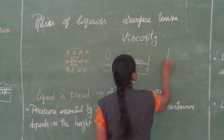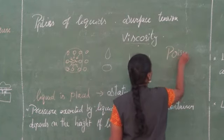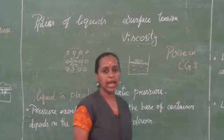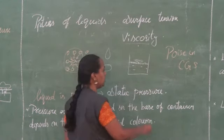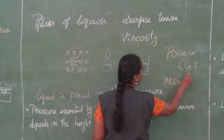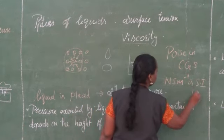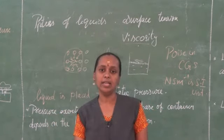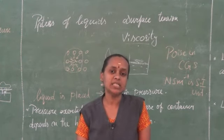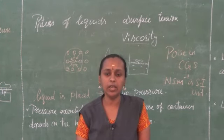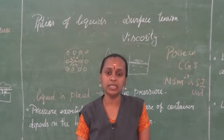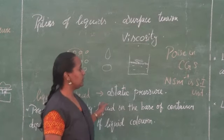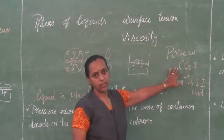The unit of viscosity is poise in CGS. In SI unit it is Newton second per meter. Viscosity is the ability of a liquid to resist flow. We studied this with examples of water and honey, and also about the SI unit of viscosity.